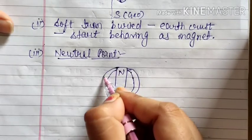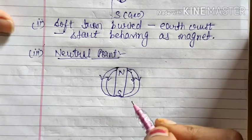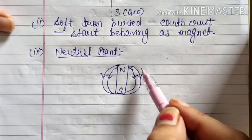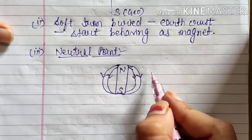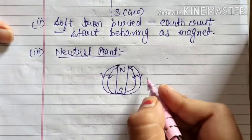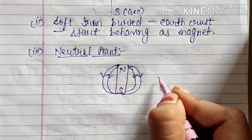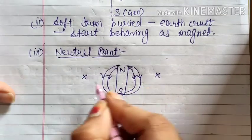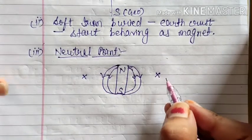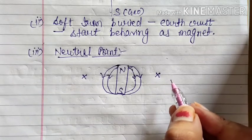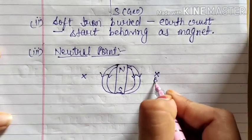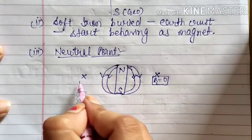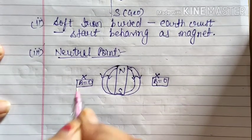When we keep continuously doing this process, one point comes at a distance from the magnet where the compass does not show any particular deflection — it can rest in any direction. Two such points exist on both sides of the magnet where the magnetic compass is unable to show a particular direction. The reason is that at these points the net magnetic field becomes zero. Magnetic field is represented by B, which is a vector quantity, and at both these points the magnetic field becomes zero.